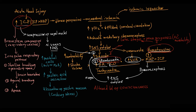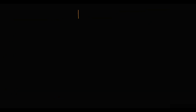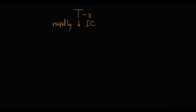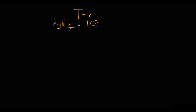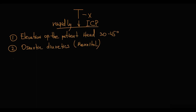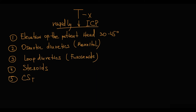The Cushing reflex is usually an irreversible condition with a terminal prognosis for the patient. Treatment is aimed at rapid lowering of intracranial pressure and includes elevation of the patient's head to 30–45 degrees, osmotic diuretics such as mannitol, loop diuretics such as furosemide, steroids, cerebrospinal fluid drainage, and hyperventilation.